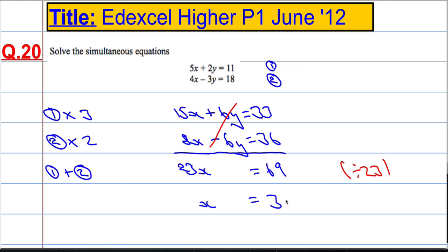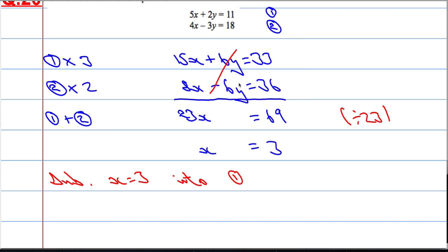Fantastic. Now I know what x is, I can solve for y. I'm going to substitute x equals 3 into — and I can sub it into either equation, it should work out. I'm going to sub it into equation 1 because I've got no negative sign here, but it would work in equation 2 as well. So we get equation 1 again.